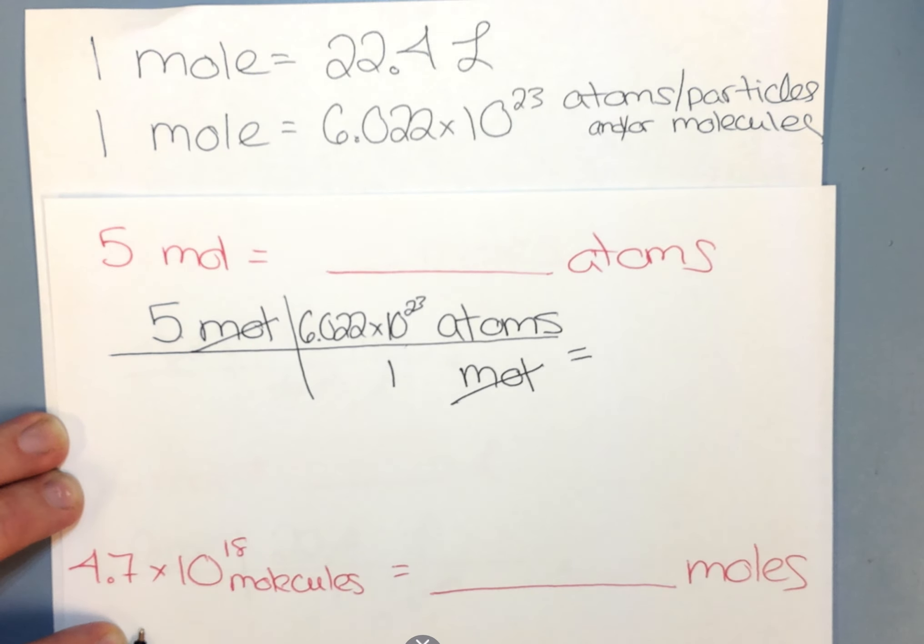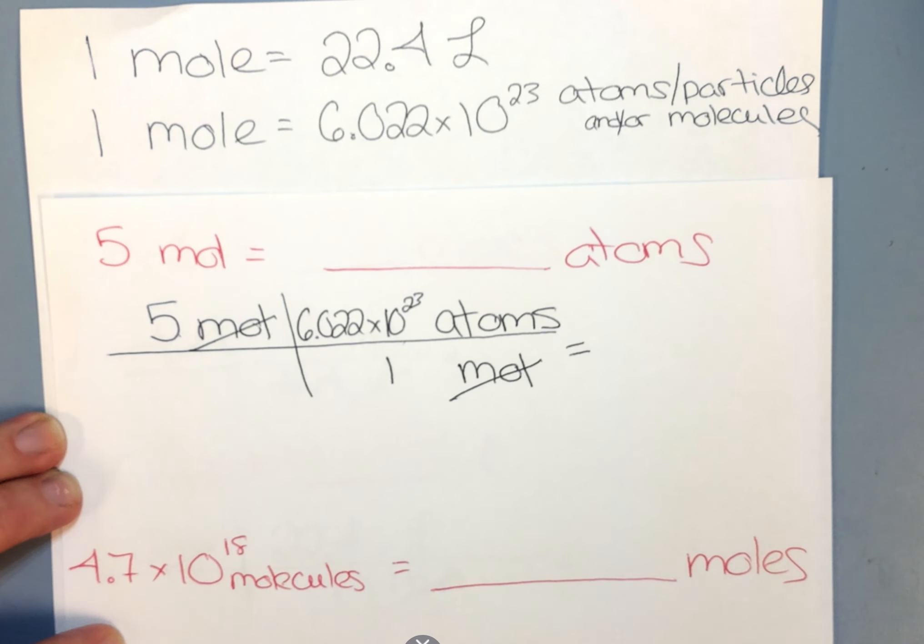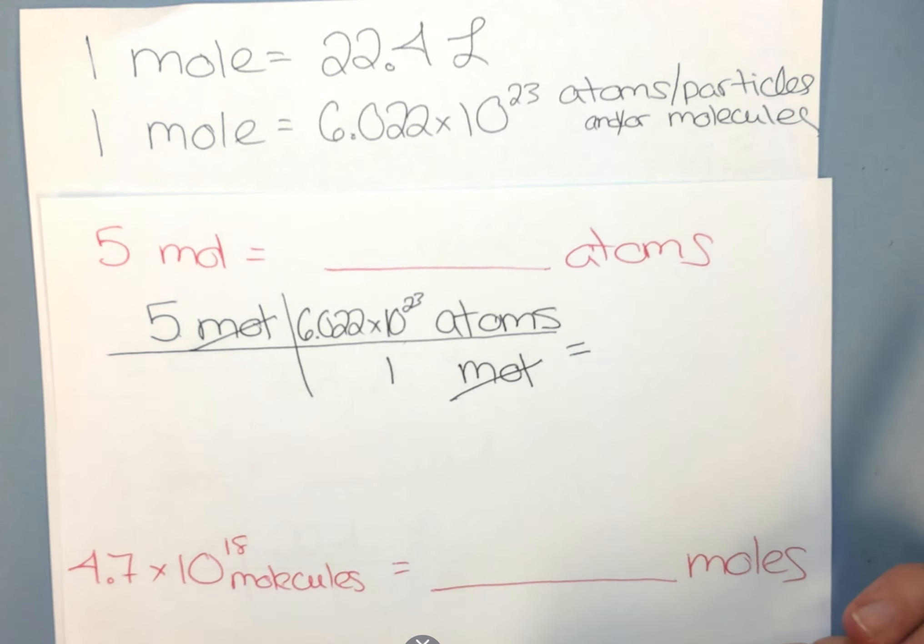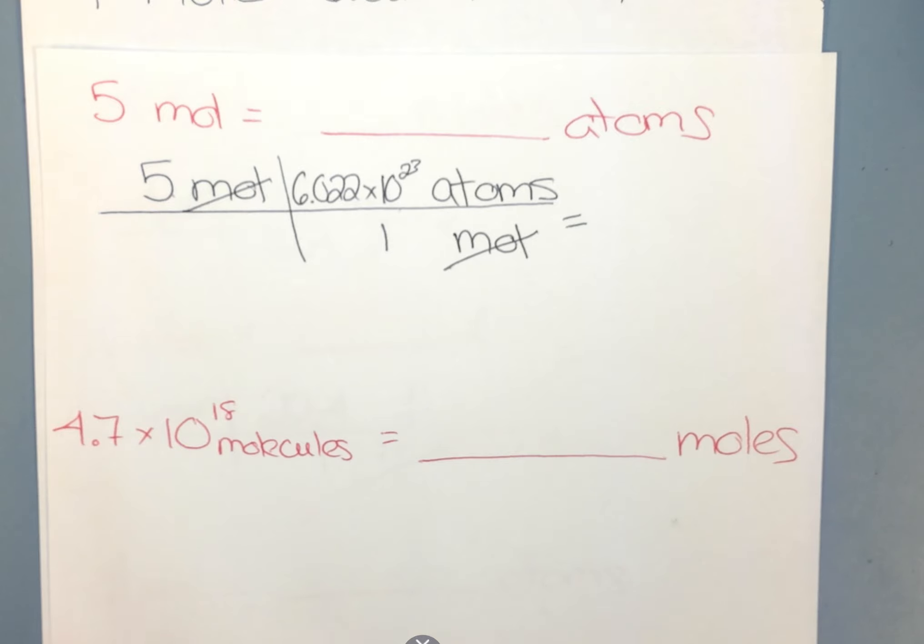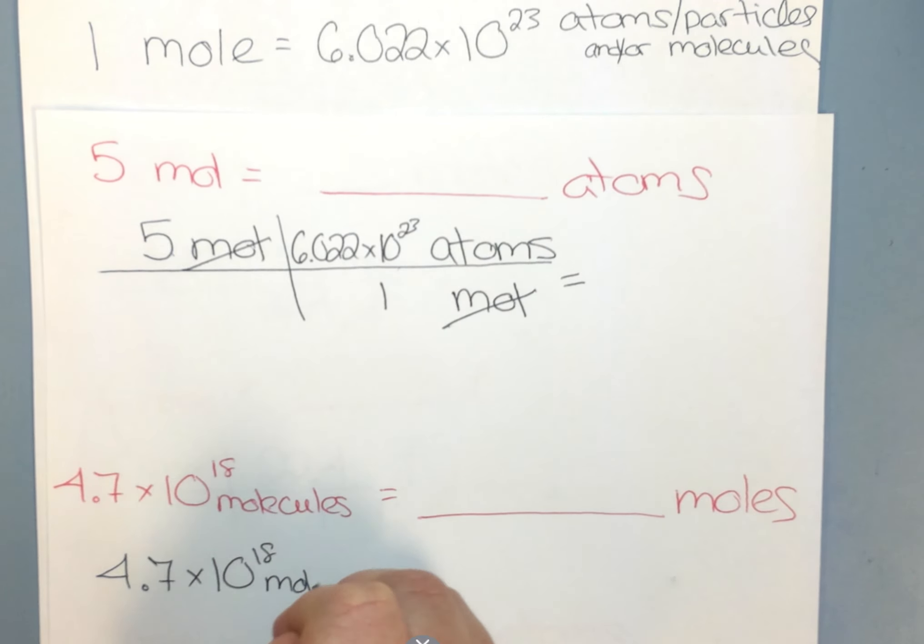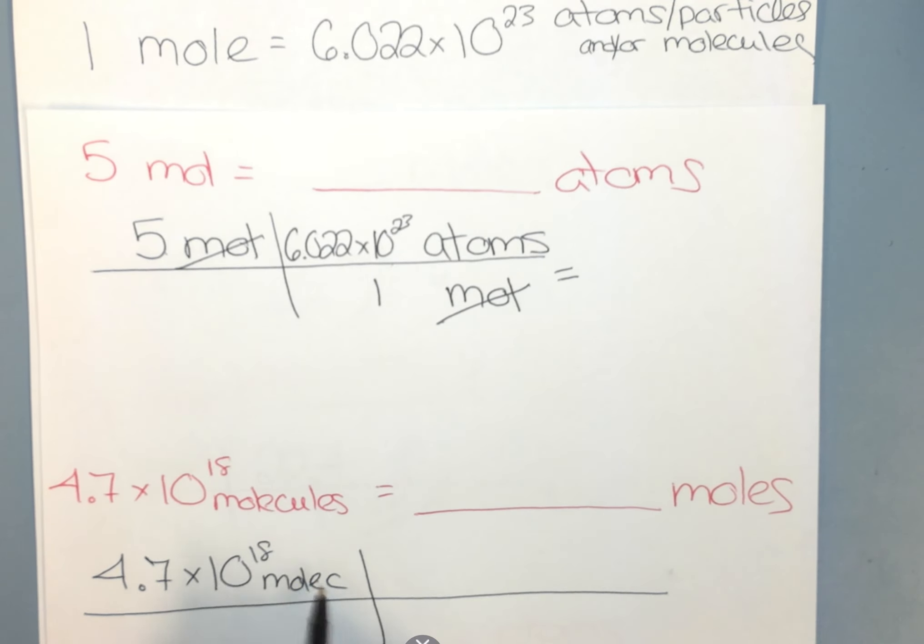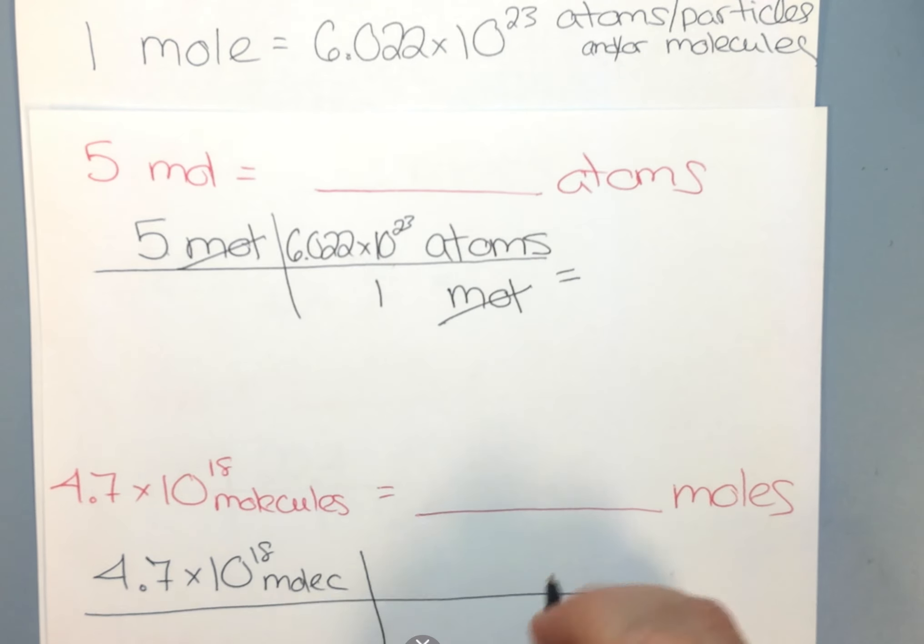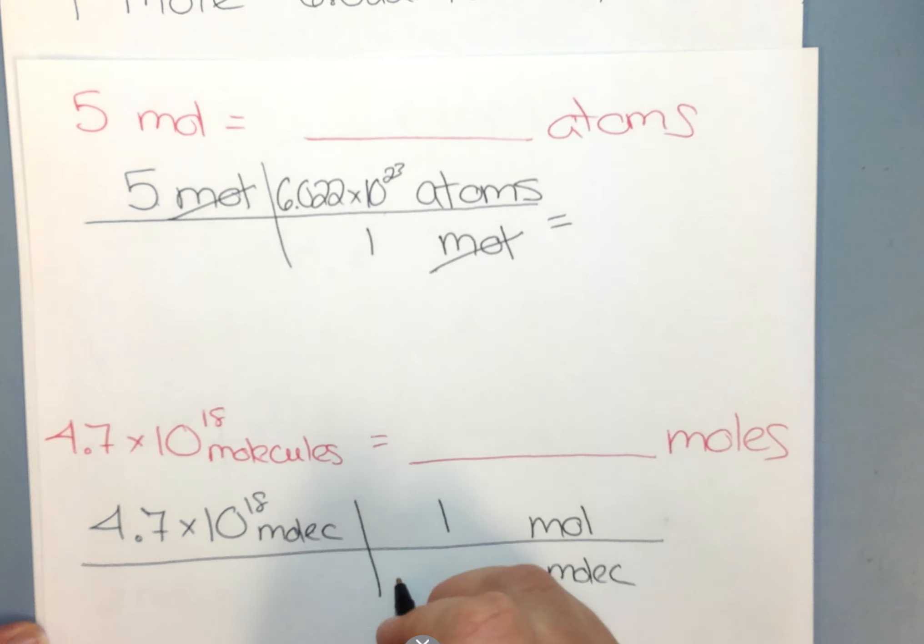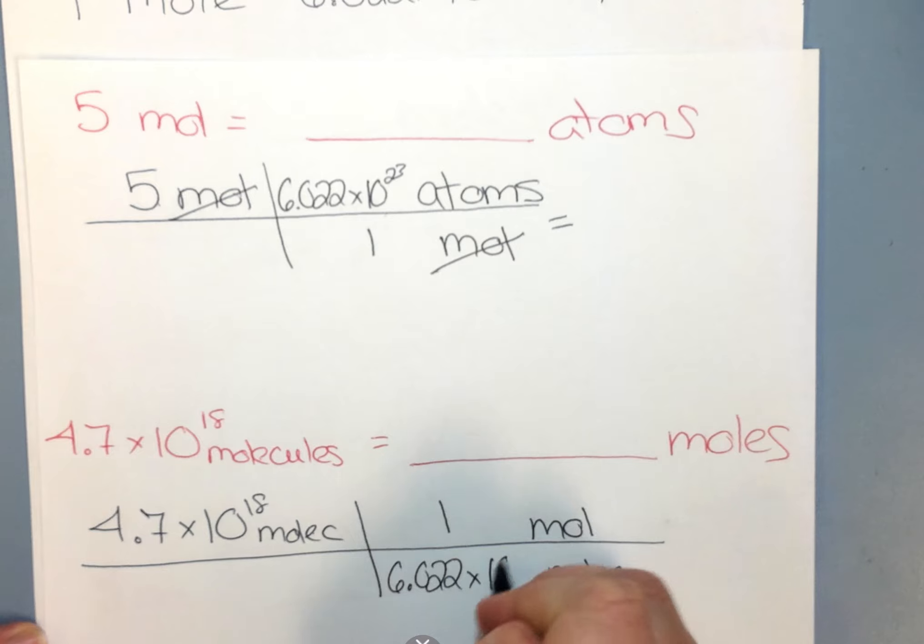This next one, we're going from molecules to moles. If you look at my conversion factor, we can see that 1 mole is equal to 6.022 times 10 to the 23rd atoms, particles, molecules. It really can be anything. That's why on the top of your paper it says things, because it can be anything. So when I go to do this problem, I start with my 4.7 times 10 to the 18 molecules. Molecules is at top. I'm going to put molecules on the bottom. I'm going to put my mole on top, because that's where I'm trying to go. And I know that 1 mole is 6.022 times 10 to the 23rd molecules.